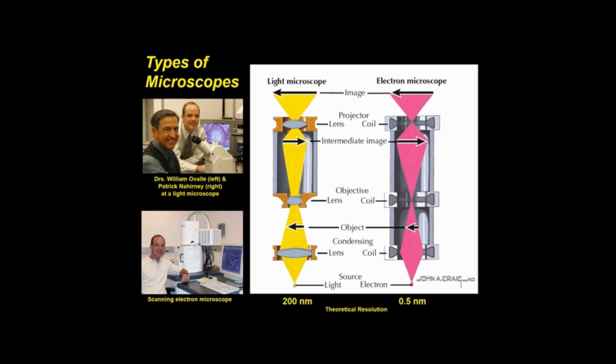Tissues are chemically fixed and embedded in paraffin or plastic, which are then sectioned with a microtome. Most tissues and cells absorb very little light or electrons, so staining with chemical dyes and heavy metals is needed.